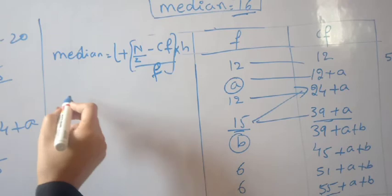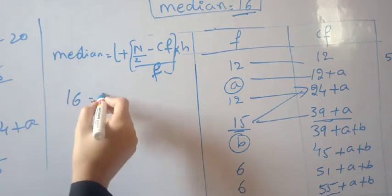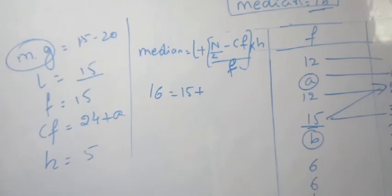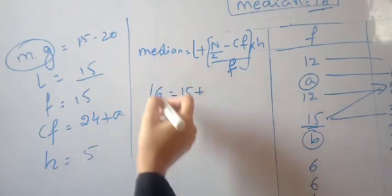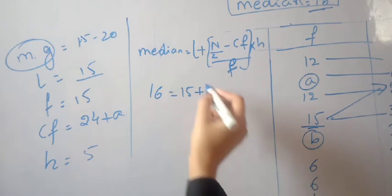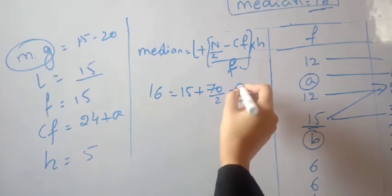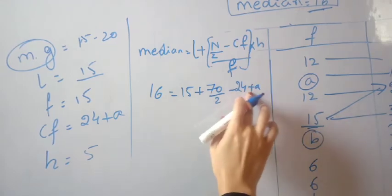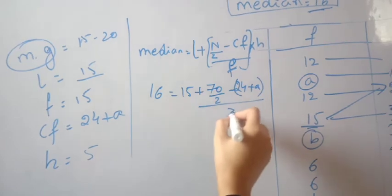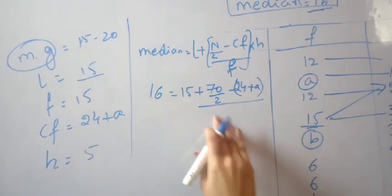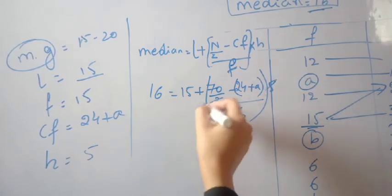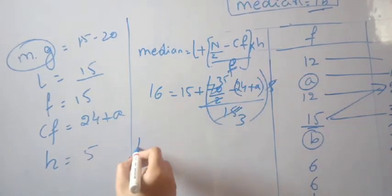The median formula is: median = L + [(n/2 - cf)/f] × h. Substituting the values: 16 = 15 + [(70/2 - (24+A))/15] × 5, where n is the total frequency 70, cf is 24+A, f is 15, and h is 5.